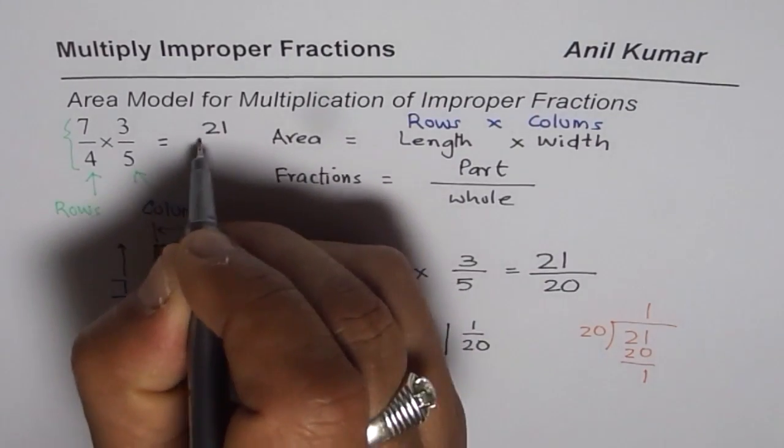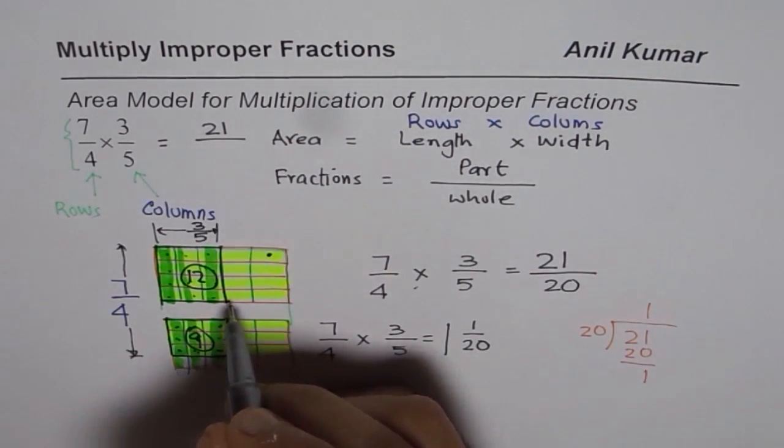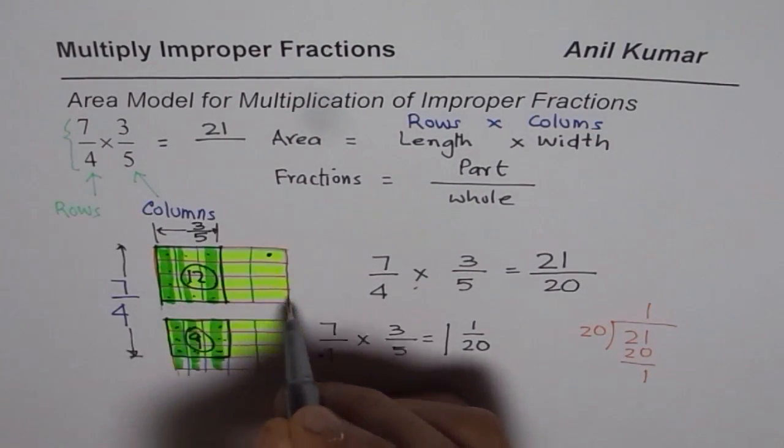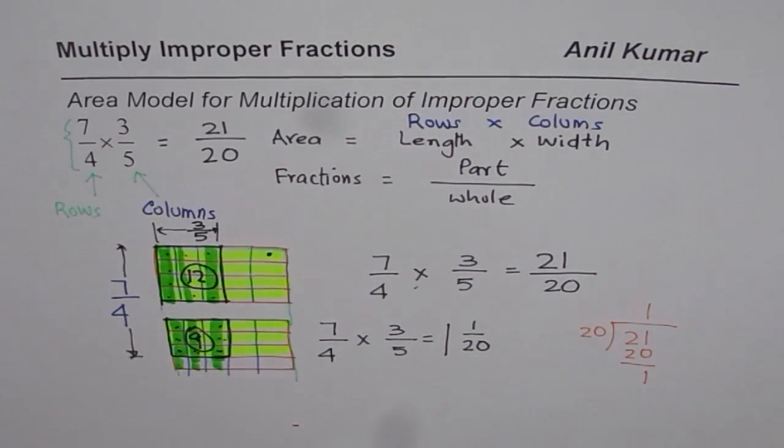We found by adding the units that these are 21 units. Each unit, we have how many? We have 20 in all. So 20 small units make the whole. So 4 times 5 also is 20, gives you the denominator of the product. So that is how we multiply and that is how we use area model to multiply improper fractions. I hope that helps. Thank you and all the best.